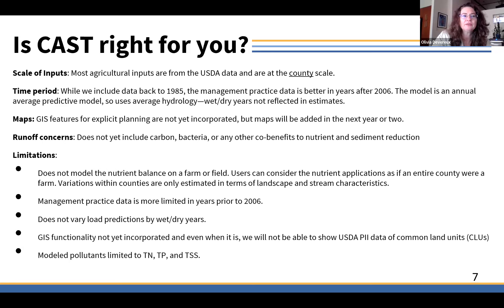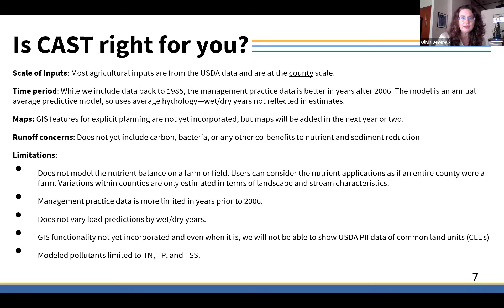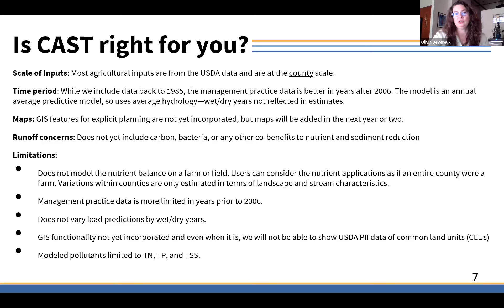Continuing to look at whether CAST is right for you: most of the agricultural inputs are from USDA data — that would be the Ag Census and National Agricultural Statistics Service surveys — and most of those data are at the county scale. So the inputs are at the county; we're using county-scale inputs and the land use, which is quite fine scale, to distribute the input data for manure, fertilizer, and all that information. The time period goes back to 1985, but the best management practice data is best in years after 2006. That's the data from NRCS, whose database goes back to 2006 when they had a big database changeover.